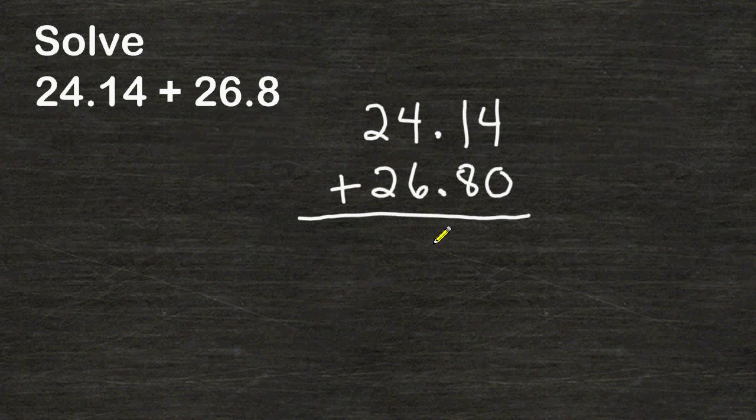When adding and subtracting decimal values, make sure that your decimal point is lined up, which it is, and we can drop that straight down. This column is a total of 4 hundredths. This column is a total of 9 tenths. This column is a total of 10 ones, so we place a zero here and carry a one. And in this column, we have a total of 5 tens.